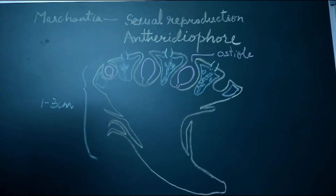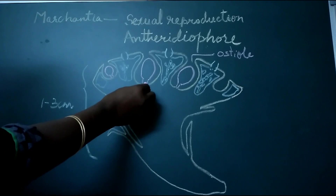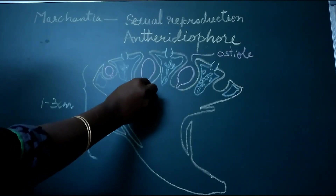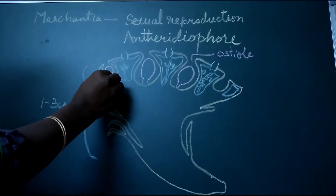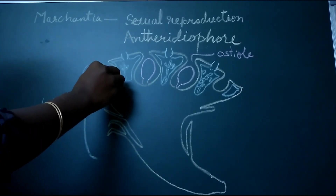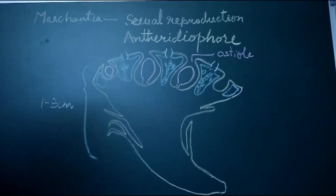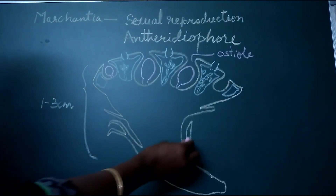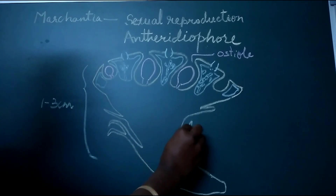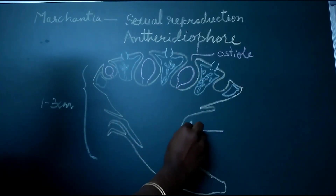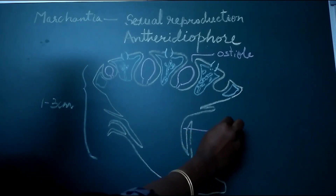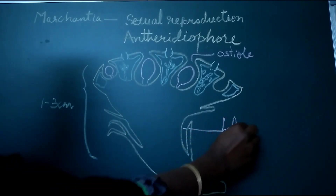The antheridia are arranged in an acropetal manner on the peltate disc — that is, the larger antheridia are towards the central region of the antheridiophore, whereas the smaller antheridia are towards the periphery. The thallus and the antheridiophore are internally similar and show lateral grooves.